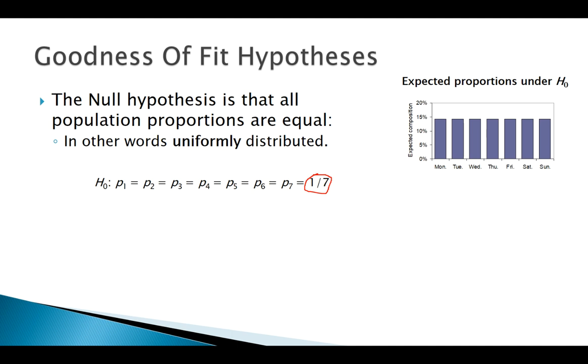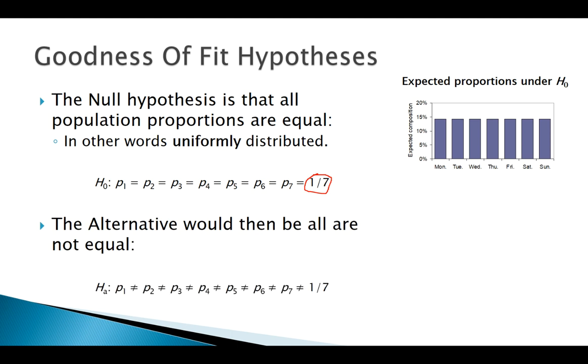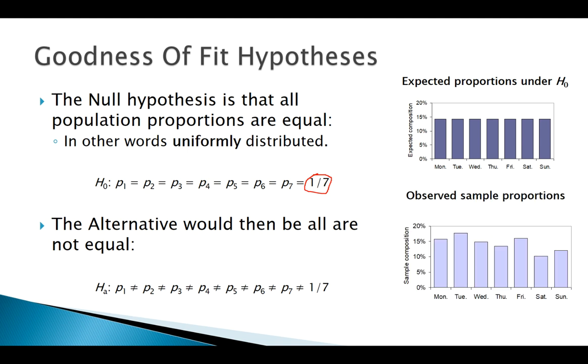Here's a graph of a uniform distribution. This is what we would expect it to look like. Our alternative would then be that they are not all equal to 1/7.